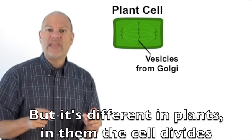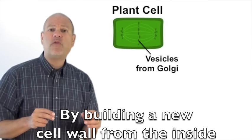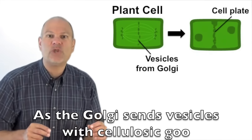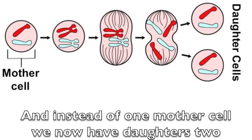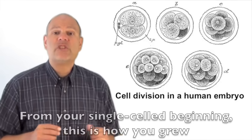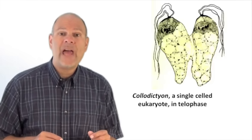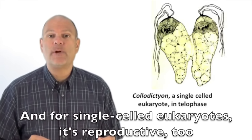But it's different in plants. And then the cell divides by building a new cell wall from the inside. As the Golgi sends vesicles with cellulose goo, which makes a plate, then a wall divides a cell in two. And instead of one mother cell, we now have daughters too. Identical twins, kind of old but kind of new. From your single cell beginning, this is how you grew. And for single cell eukaryotes, it's reproductive too.